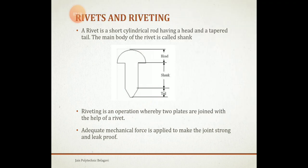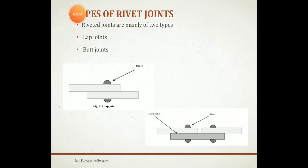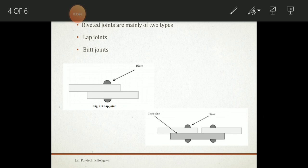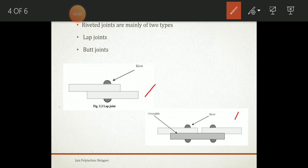Moving on to the types of rivet joints, there are different types such as lap joints and butt joints. Within lap and butt joints there are further classifications like single riveted lap joint, double riveted lap joint, and double cover plate lap joint. These two — lap joint and butt joint — are the basic types, and diagrams are shown here: this is for the lap joint and this is for the butt joint.